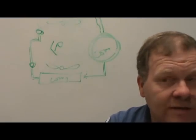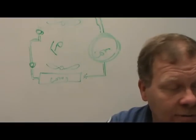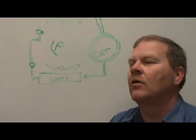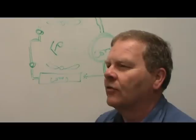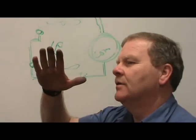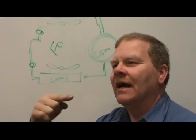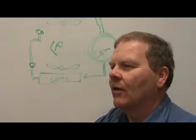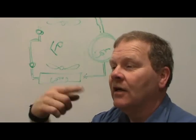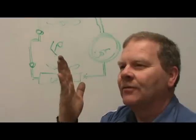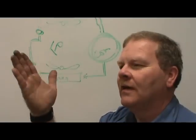Two technicians are discussing variable displacement compressors. Technician A says they're designed to control evaporator temperature; Technician B says evaporator pressure. Both are correct. A variable displacement compressor has a swash plate inside at an angle — as it turns, the pistons go back and forth. If you change the angle of that swash plate, the pistons don't stroke anymore. They use refrigerant pressure and a solenoid to control the angle of the swash plate.